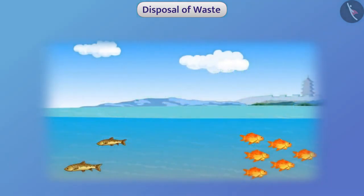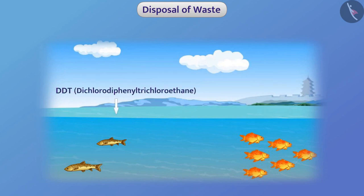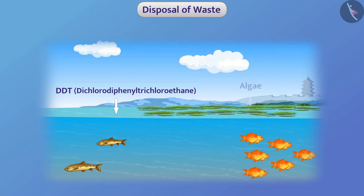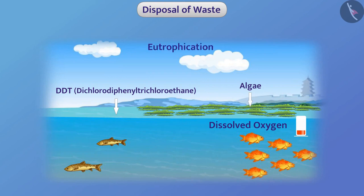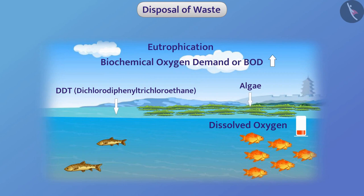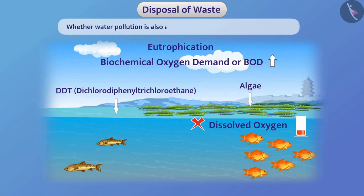Due to mixing of non-biodegradable substances such as DDT (dichlorodiphenyltrichloroethane) in water, there is an excessive increase in nutrients in the water. This causes rapid growth of algae, which reduces the amount of dissolved oxygen in the water and degrades its quality — we call this eutrophication. Due to this, the Biochemical Oxygen Demand (BOD) increases, and aquatic organisms do not get sufficient oxygen and hence they die. Think about whether water pollution is also the reason for biological magnification — discuss this with your friends or teacher.